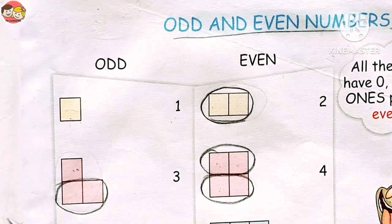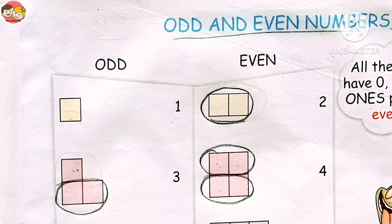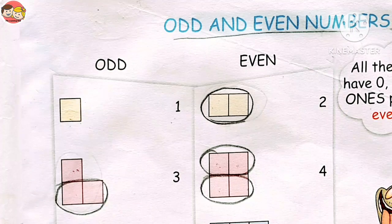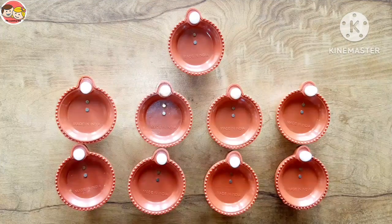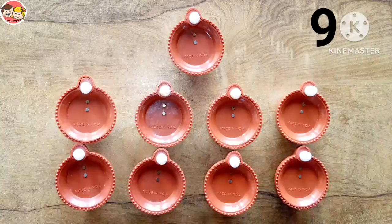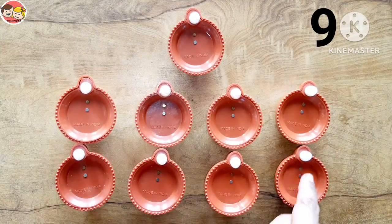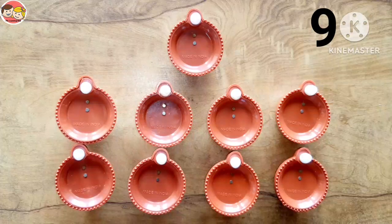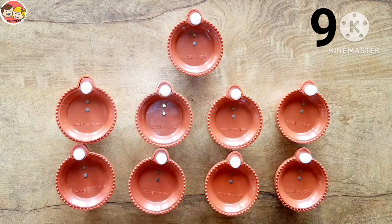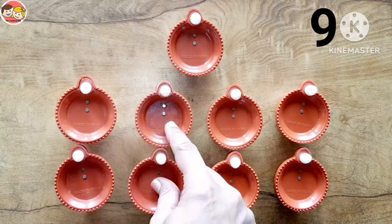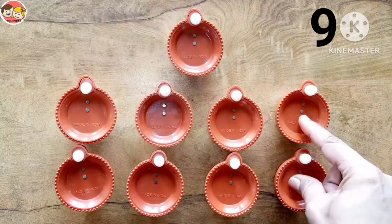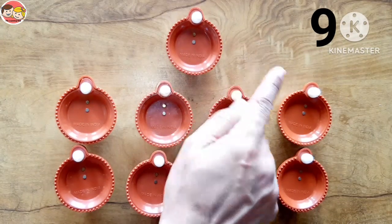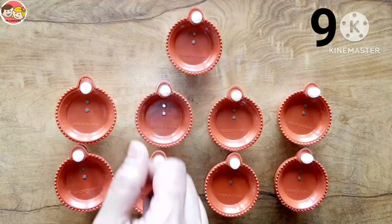So number one and three are odd numbers. Now children, look here — there are nine dias: one, two, three, four, five, six, seven, eight, nine. We check how many pairs there are: one pair, two pairs, three pairs, and four pairs — one is left with no partner. So number nine is an odd number.